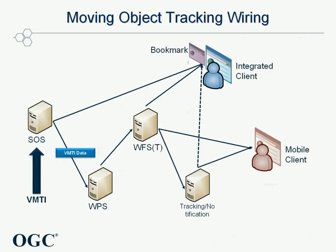Once the web processing service has access to the video, detection information combined with the video information is used to discover vehicle tracks near the bridge area. When vehicle tracks are discovered, they are pushed to the WFS. In the WFS, track features are stored as a GML representation of the STANDEG 4676 track data model.